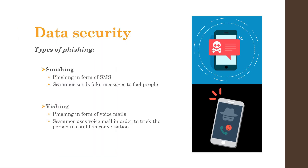There are two types of phishing: smishing and vishing. Smishing is SMS phishing — this is when a scammer uses an SMS to send out fake messages to fool people. Vishing is voicemail phishing; it involves using voicemail to trick the user into establishing a conversation with them.